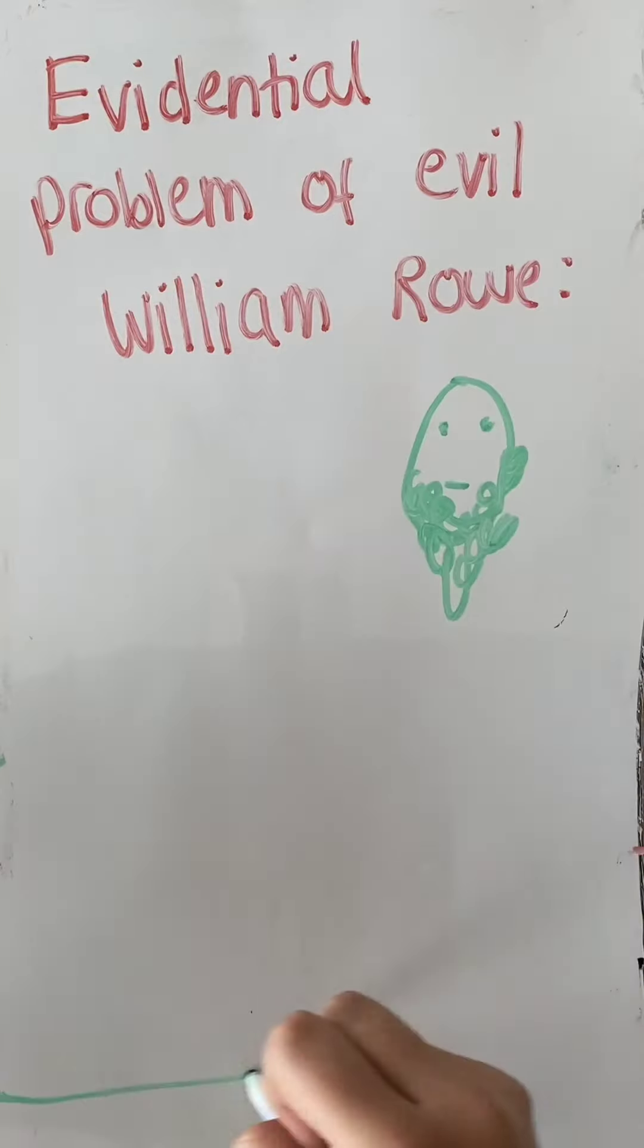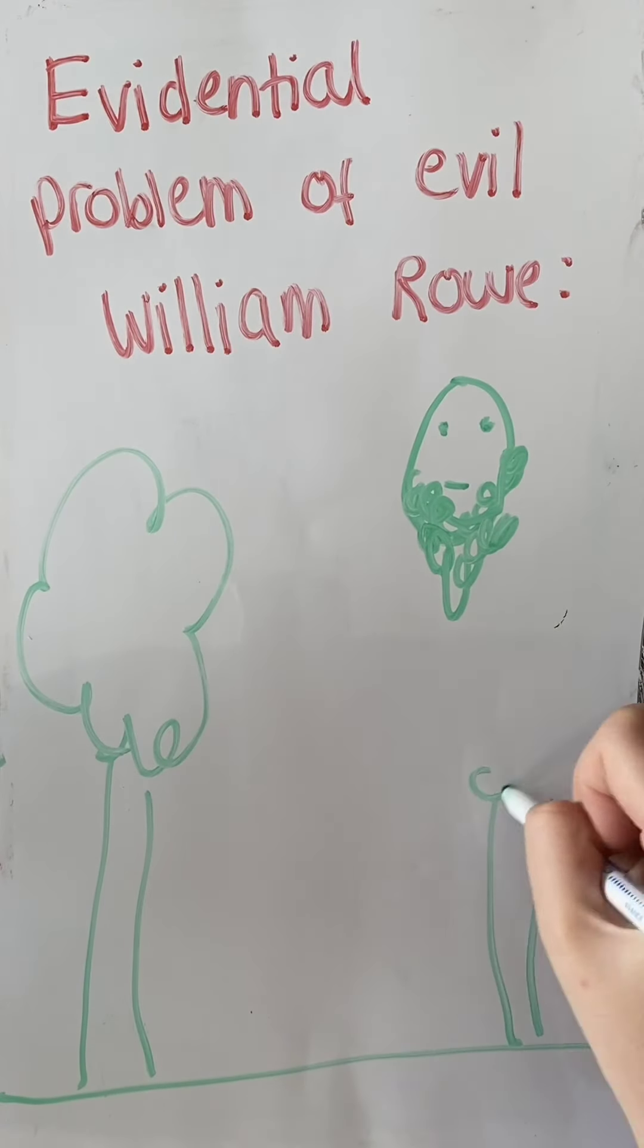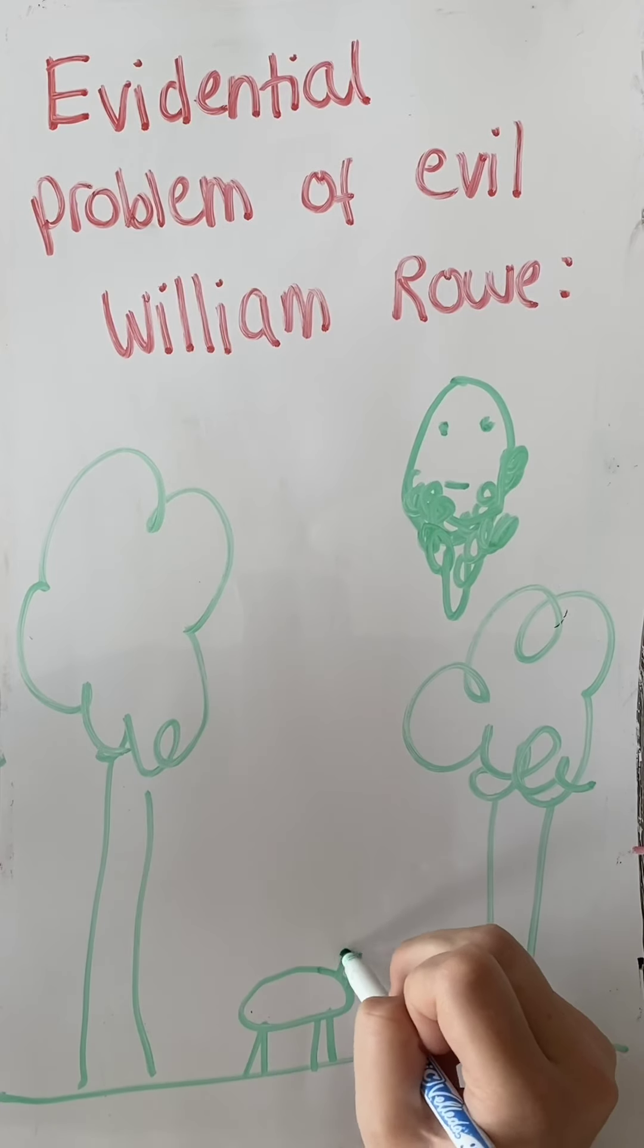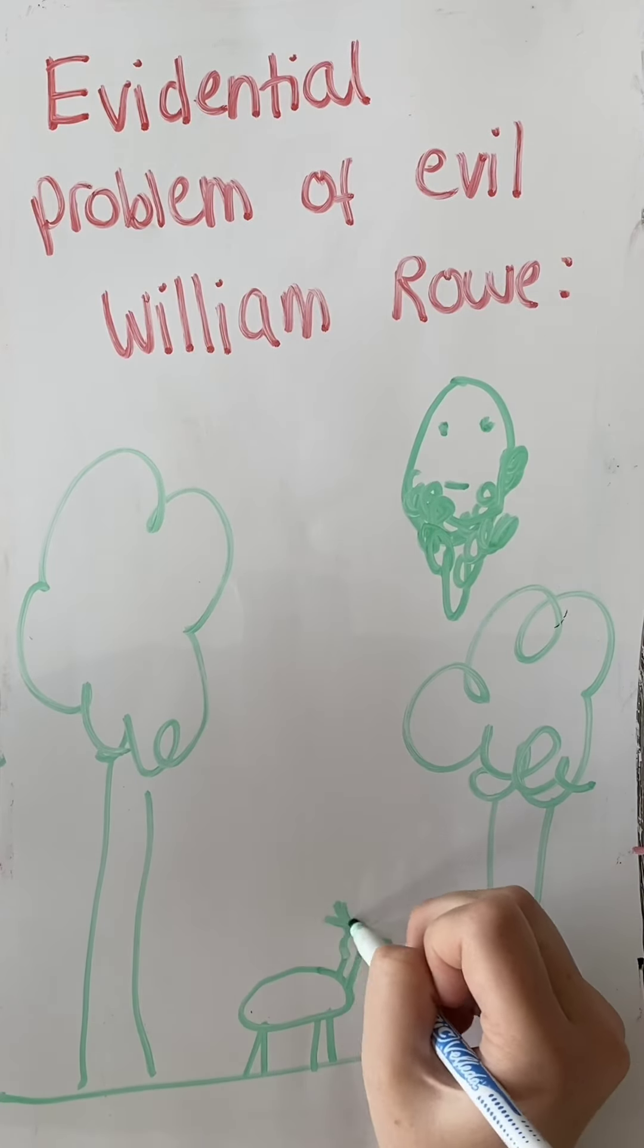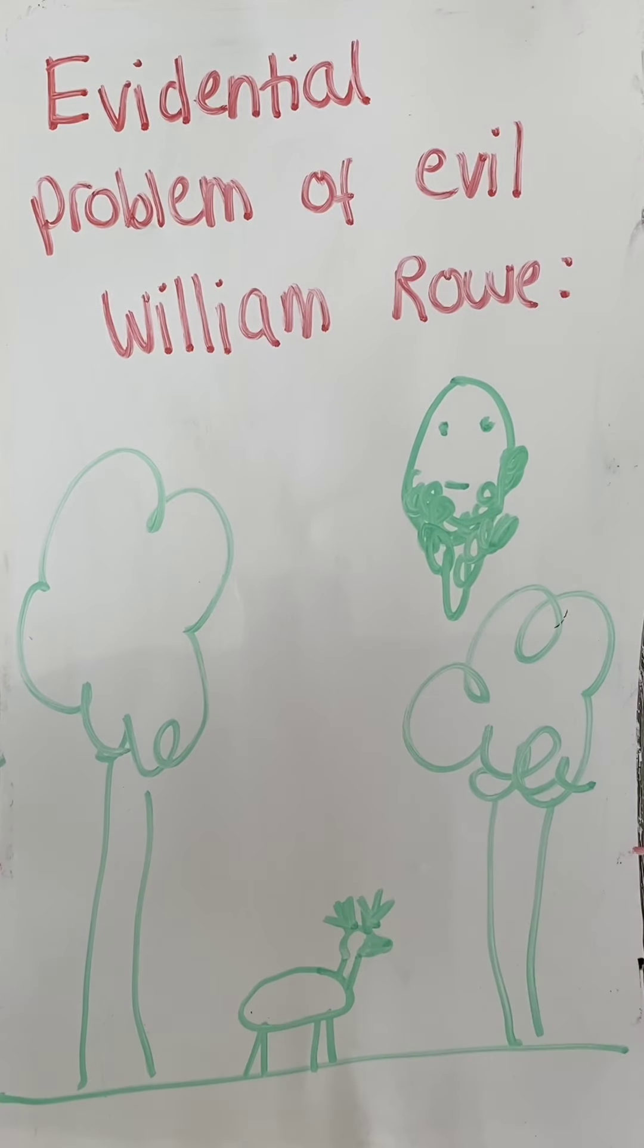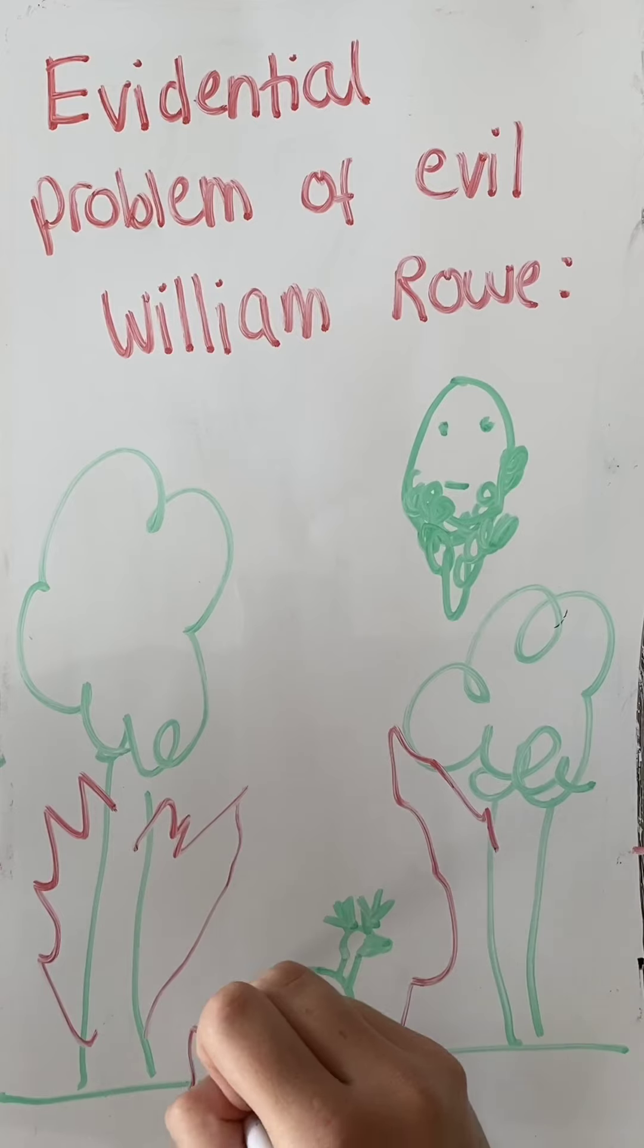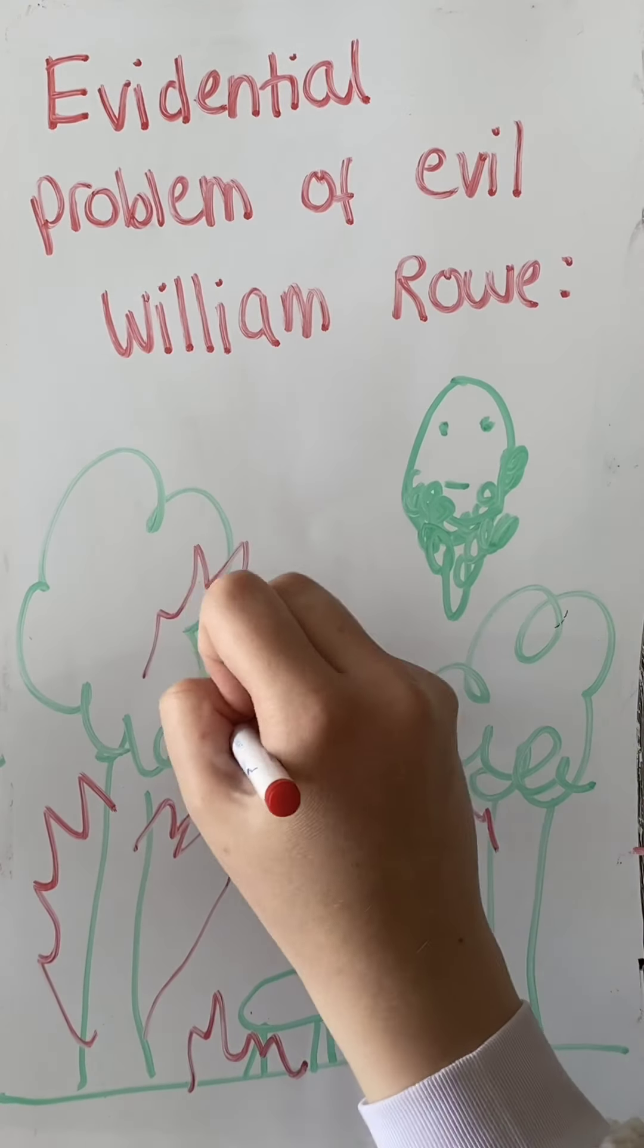William Rowe puts this forward as he argues that the sheer amount of evil in the world counts against the existence of an omnipotent, omnibenevolent, and omniscient God. This is because much of this evil does not lead to a greater good and seems pointless and preventable, and therefore it is reasonable to accept that God does not exist.